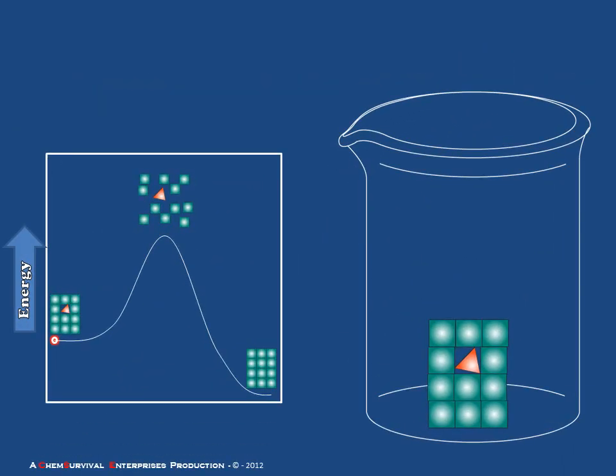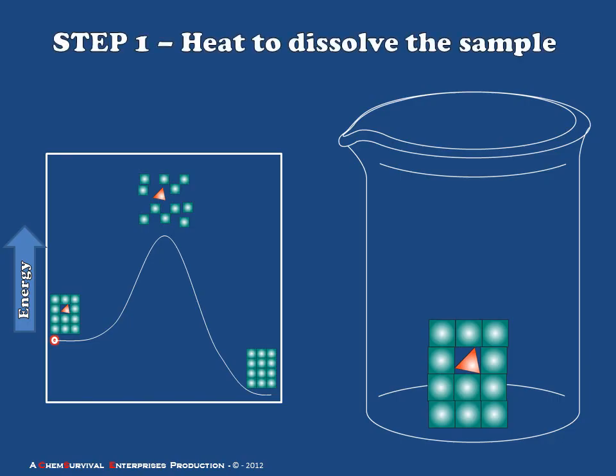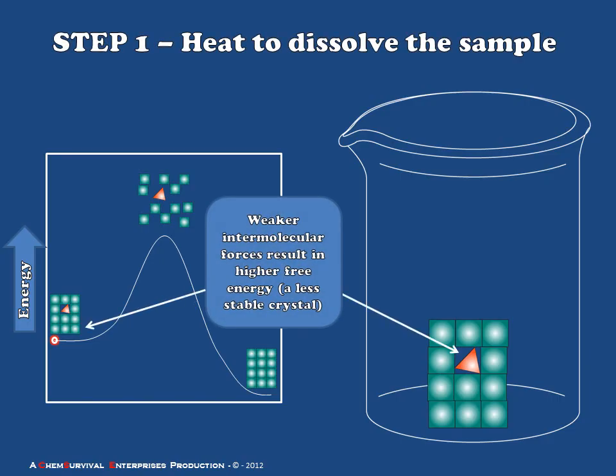So here's our new system. Notice that in this new system we have a sample which has an impurity. And that the impurity doesn't fit as well into the crystal lattice. This means that some of those intermolecular forces around this local impurity are compromised. They're weaker. And because of this, the free energy of the impure crystal is higher than the free energy of the pure crystal. So if we can disassemble this crystal down to the molecular level and then allow it to reform under conditions favoring the most stable state, we expect a crystal of higher purity to result.